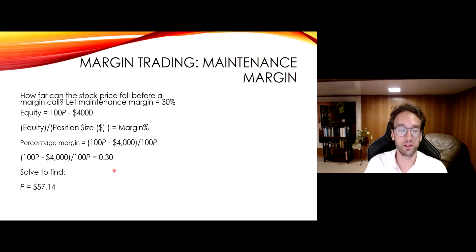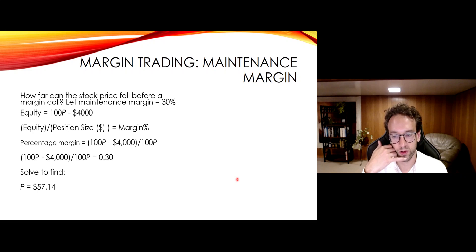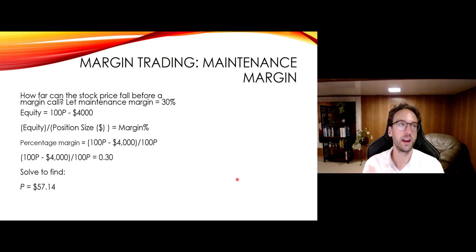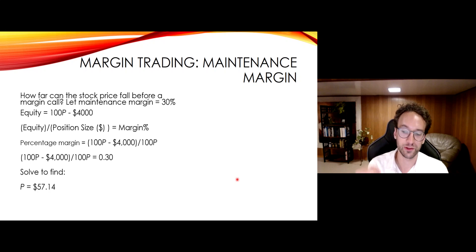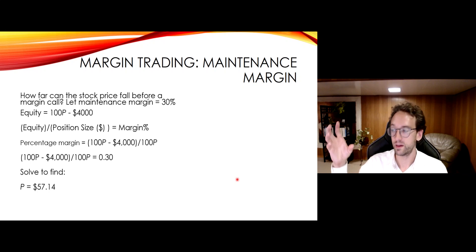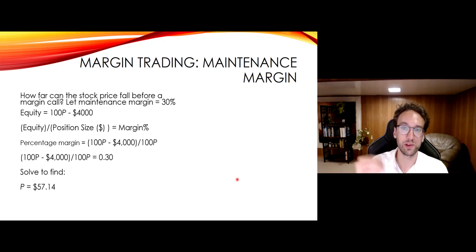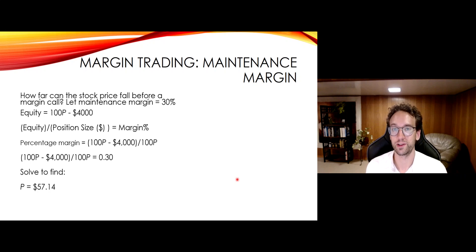P is about $57. So once this stock price hits $57, a broker will call you up and say your equity is too low. This is getting too risky. The broker cares about themselves — if your equity is too low, they worry that with some crazy stock price movement, it could actually go negative and you could no longer cover the balance. The collateral in your account, the stock you have, is no longer sufficient to protect the broker from the money that they lent you.